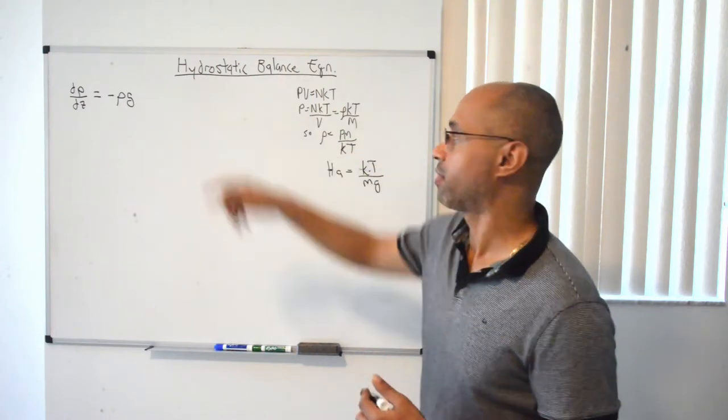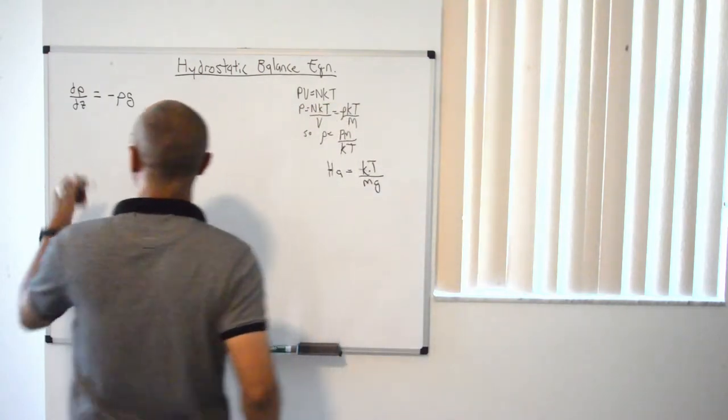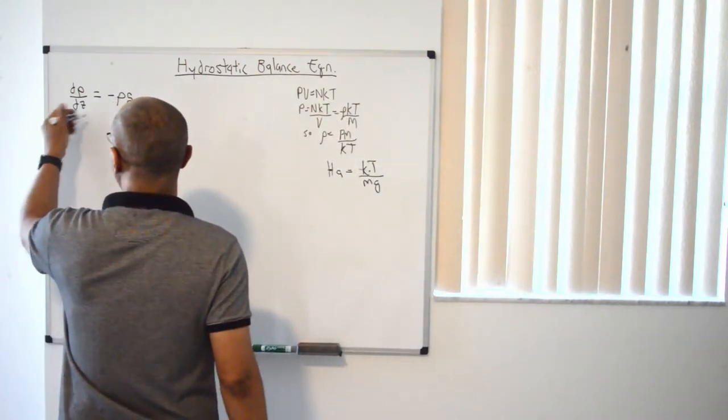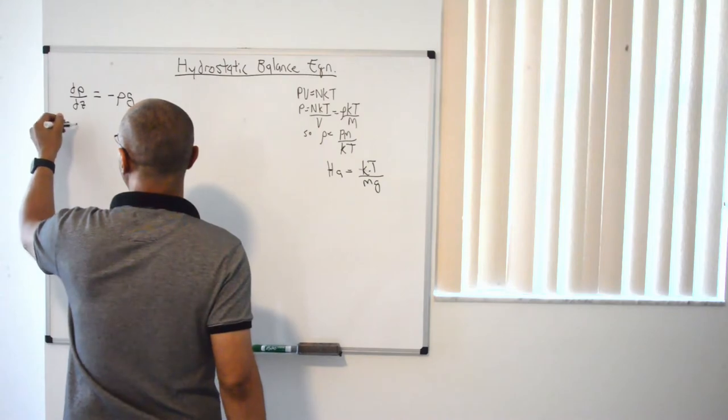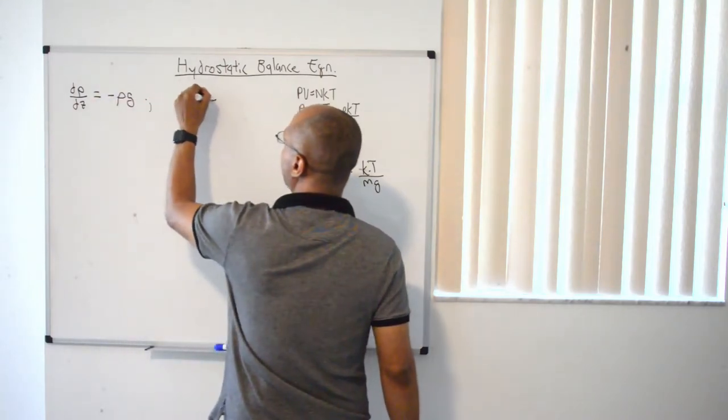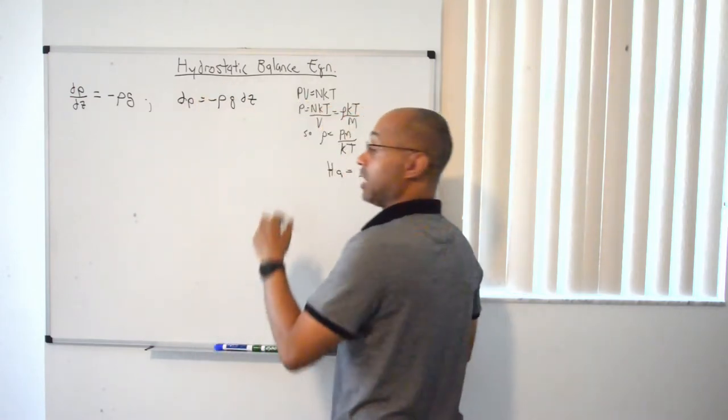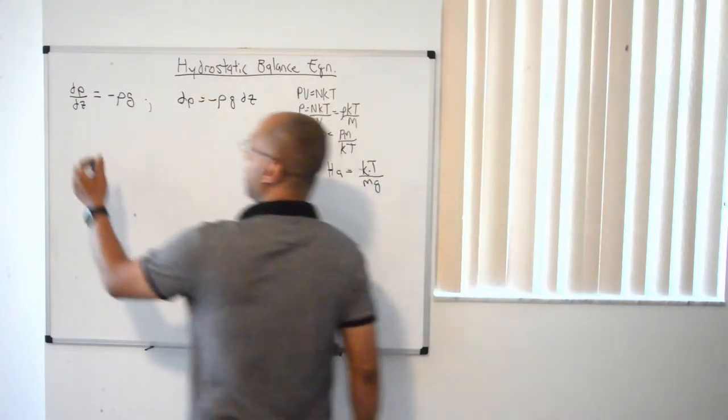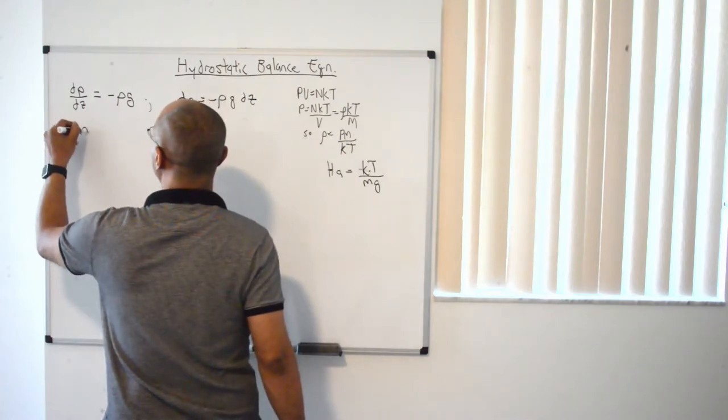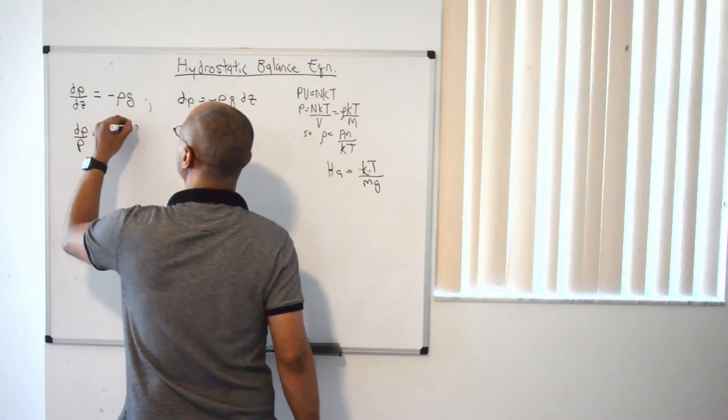And what we're going to do is plug this back in there, this equation. But before we even do that, we're going to divide both sides here by dz. So you're left with dp is equal to negative ρg dz. Just another way to do this equation. Divide both sides by p. You'll see why in a second. It's a nice little trick.